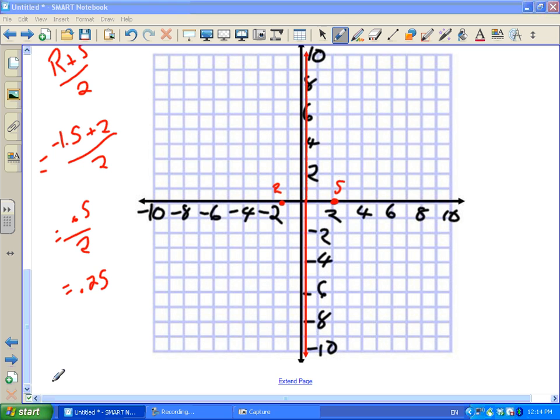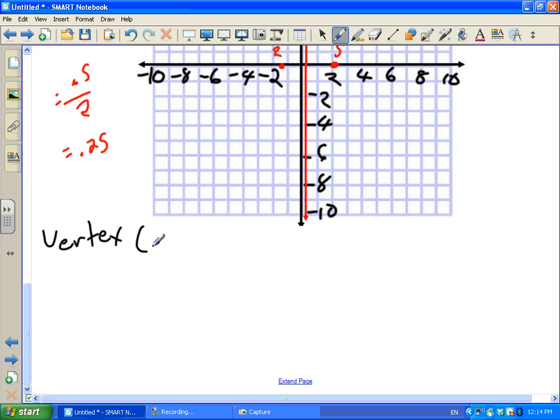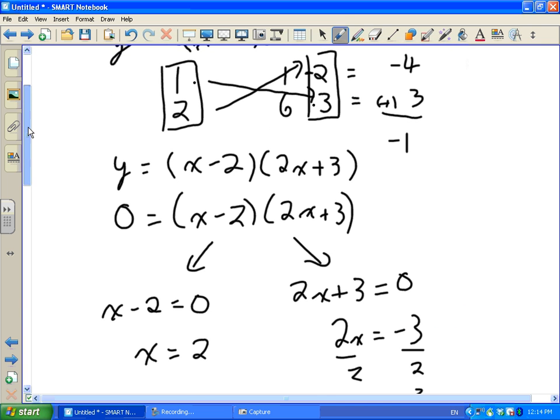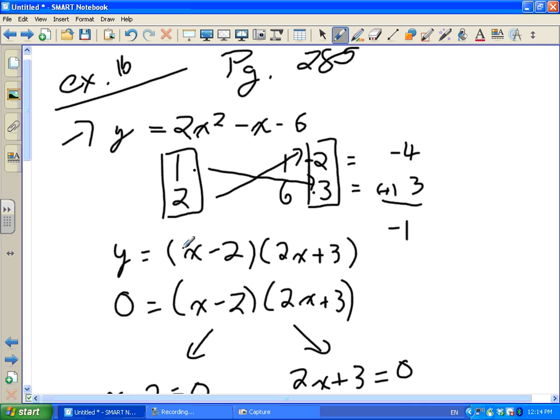So let me just write that down here. Our vertex, the x-coordinate is 0.25, and I need to find my y-coordinate. So in order to do that, I can take either, let's go right back up to the top. I can take my standard form. Here's our standard form. Or I can take my factored form.